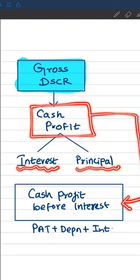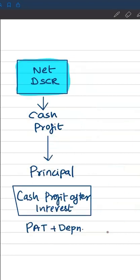So cash profit before paying interest will be compared with interest plus principal commitment. Cash profit before interest is nothing but profit after tax plus depreciation plus interest.